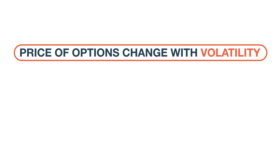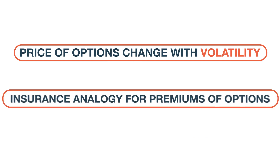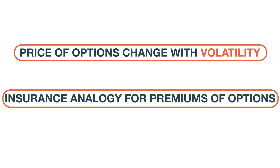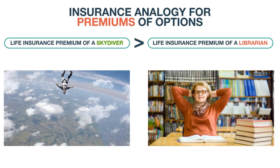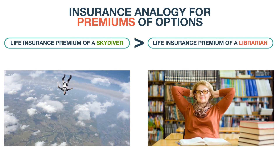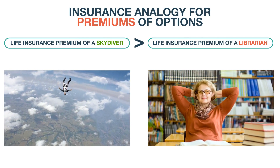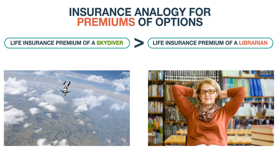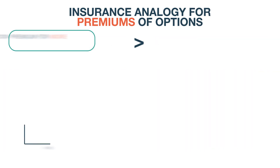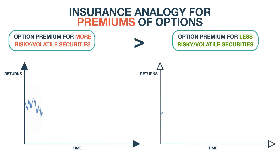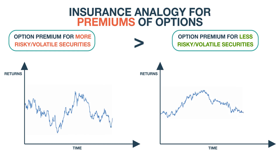The price of the option changes with volatility. To understand this better, let us look back at our insurance analogy for the premiums of options. The life insurance premium of a skydiver will be considerably higher than the life insurance premium of a librarian, because the skydiver takes more risks on a daily basis. Similarly, the option premium for those securities which are more risky or have higher volatility will be higher than those with lower volatility.